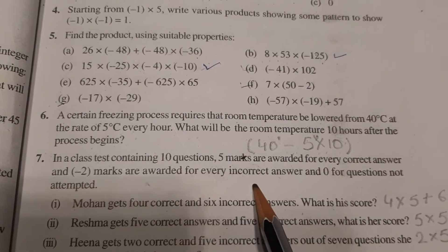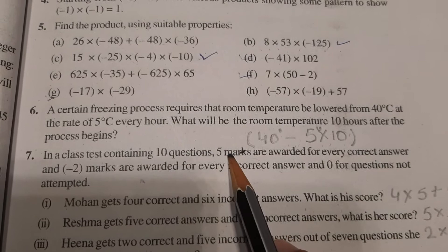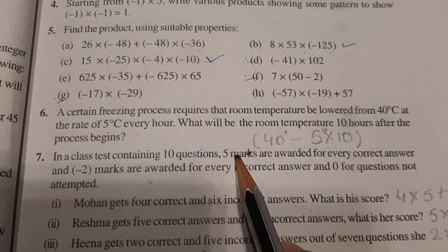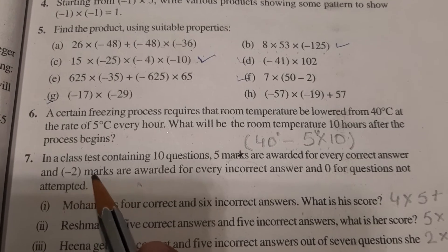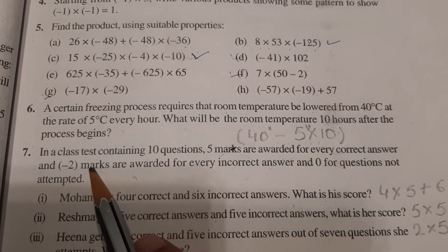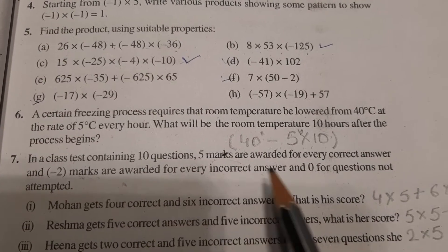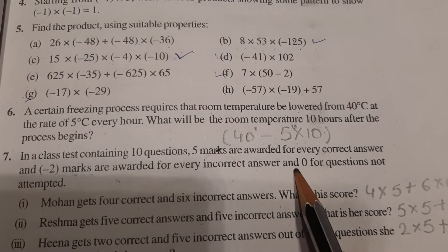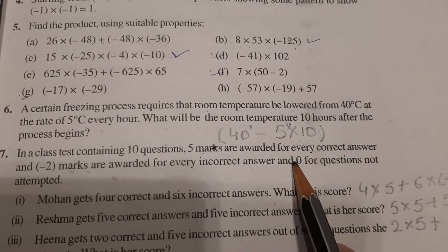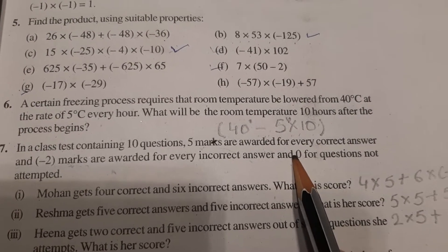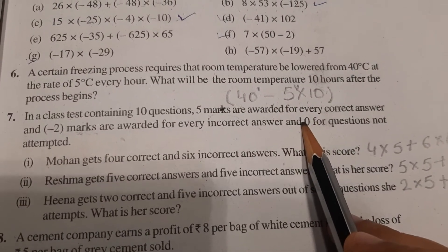It means negative marking is there. So if your answer is correct, you will get 5 marks, but if your answer is wrong, your 2 marks will be deducted, means minus 2. And if you have not attempted any question, you leave any question unattempted, then you get 0 for that.